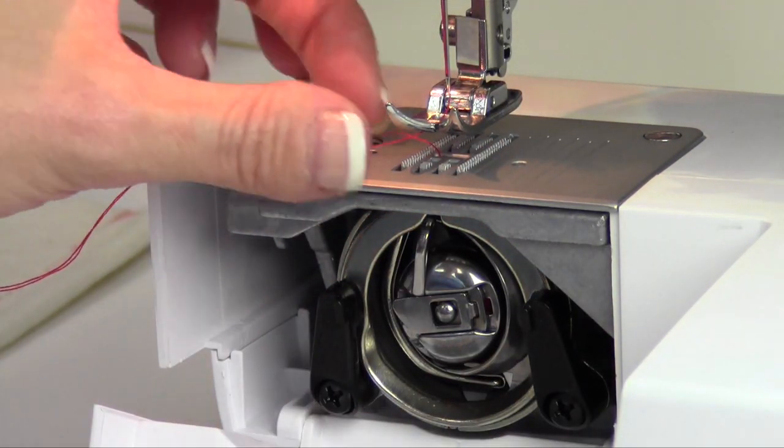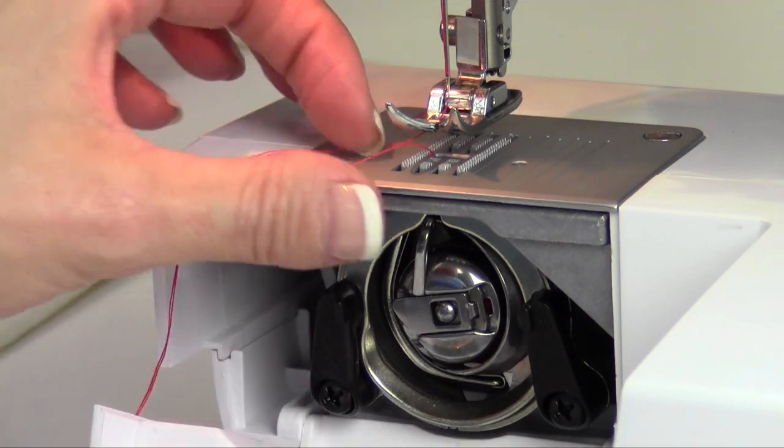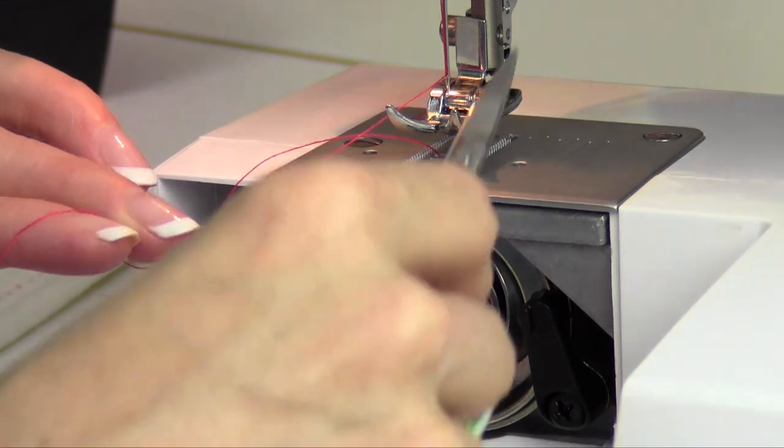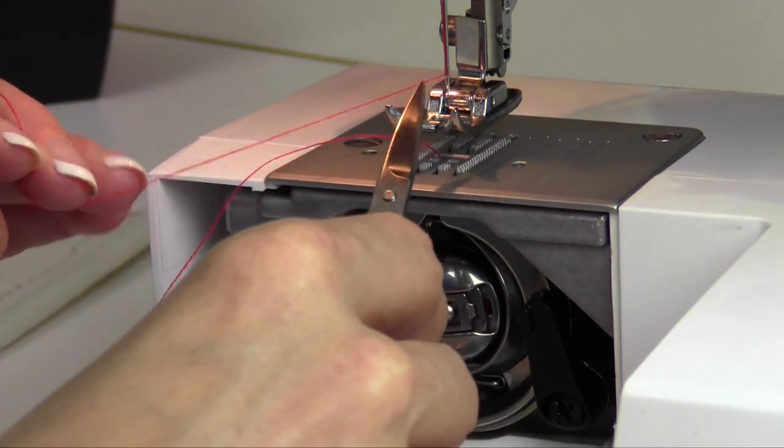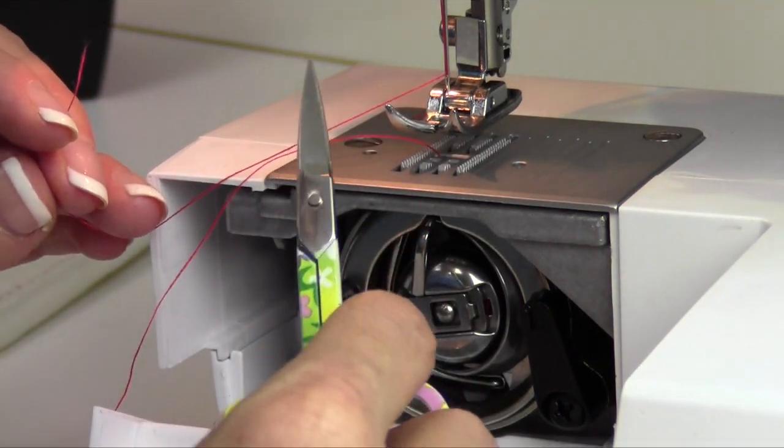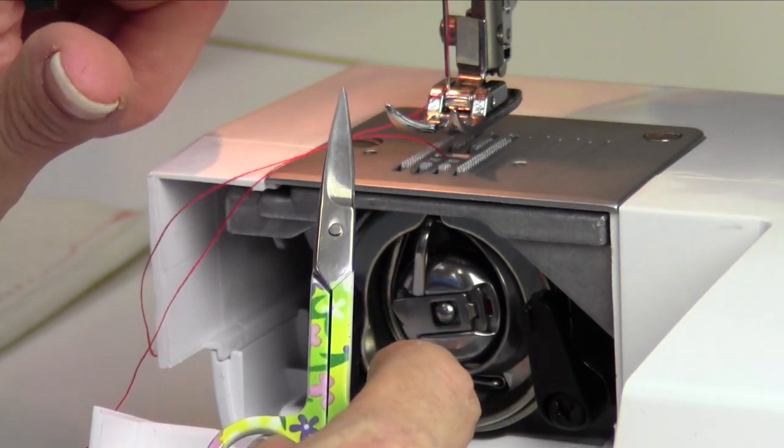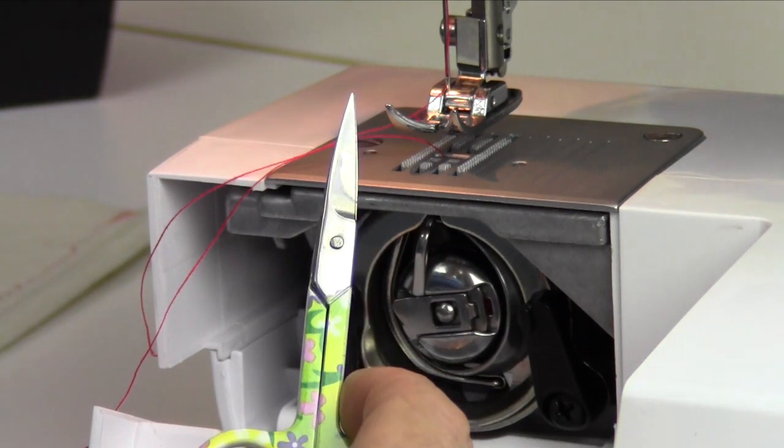First thing we're going to do, right now the machine is threaded, and I'm going to teach you something that will help keep the top part of your machine clean from lint. You notice there's a lot of lint that will gather up down at your foot, so if you take your spool and just pull it out the top, it will drag the thread up through the machine, pull some lint with it, and drag it up into your tension disk.